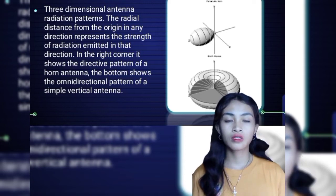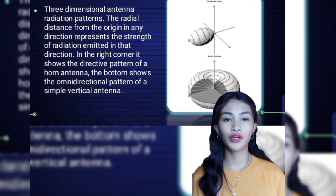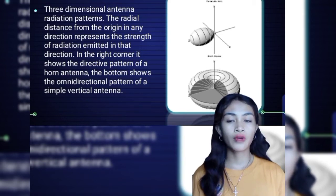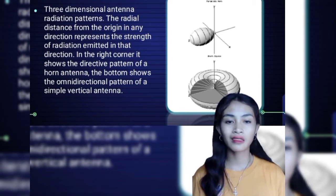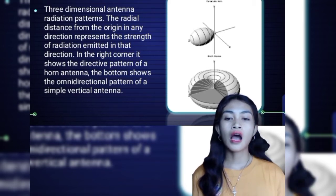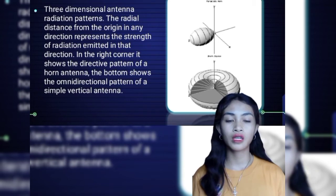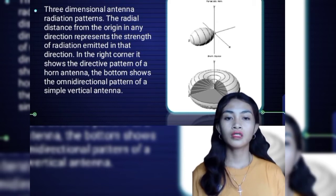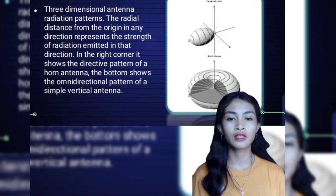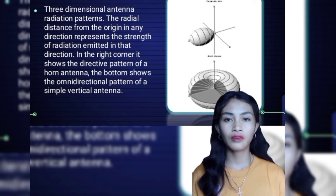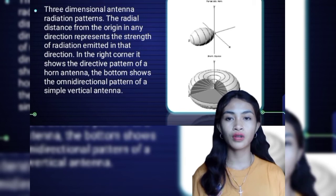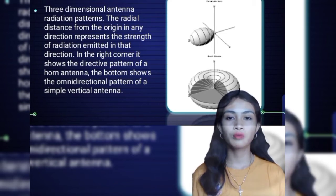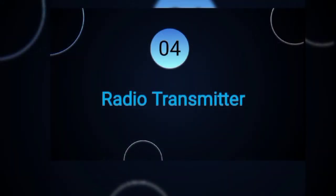The top showed the directive pattern of a horn antenna, which is used to transmit radio waves from a waveguide — a metal pipe used to carry radio waves out into space — or collect radio waves into a waveguide for reception. The bottom showed the omnidirectional pattern of a simple vertical antenna. Omnidirectional is a class of antenna which radiates equal radio power in all directions perpendicular to an axis.